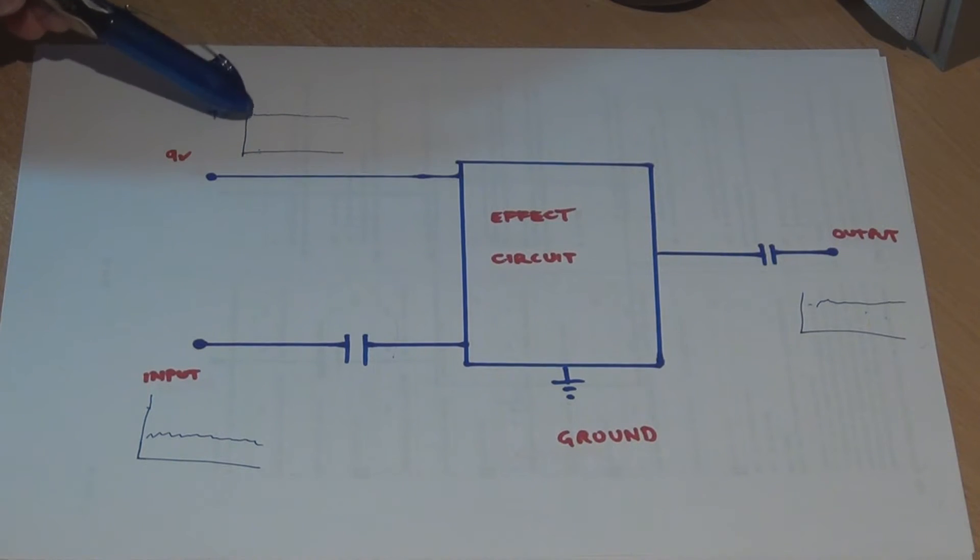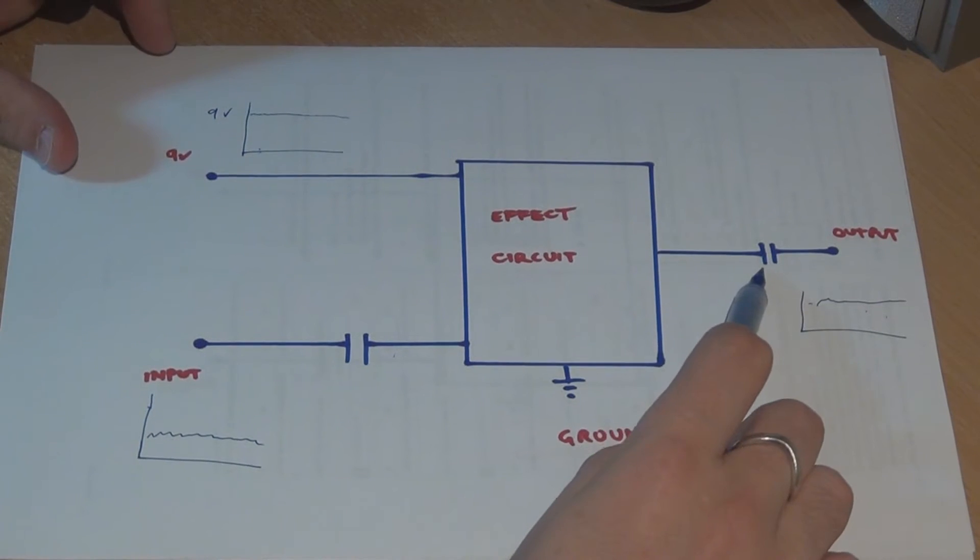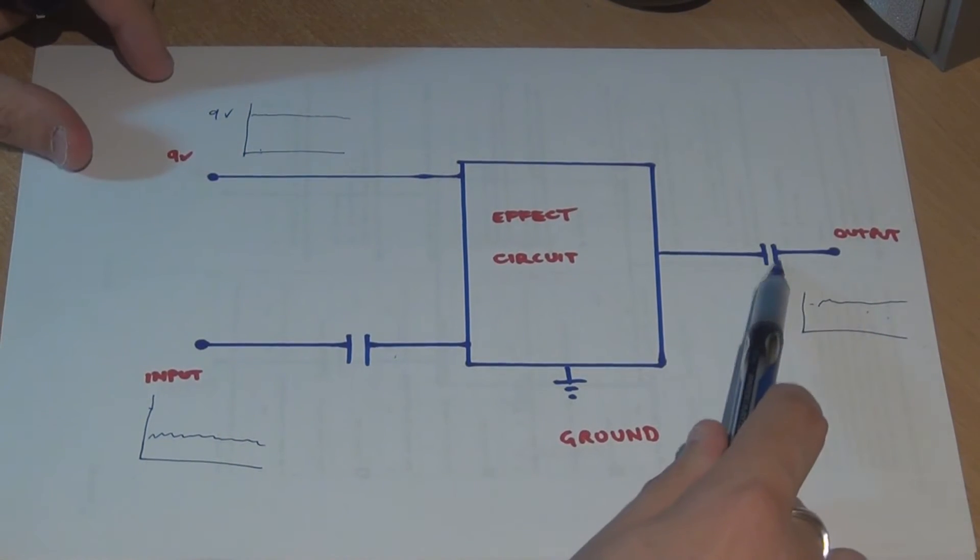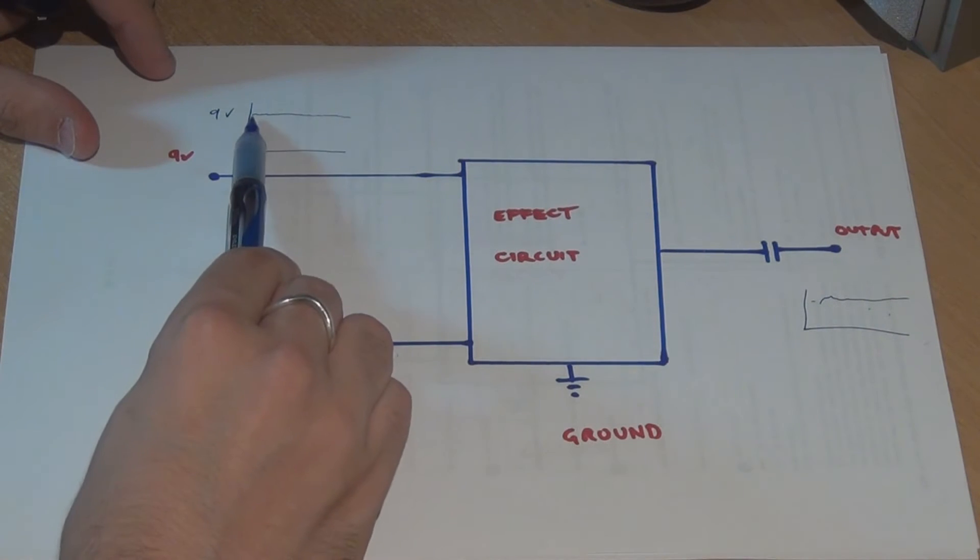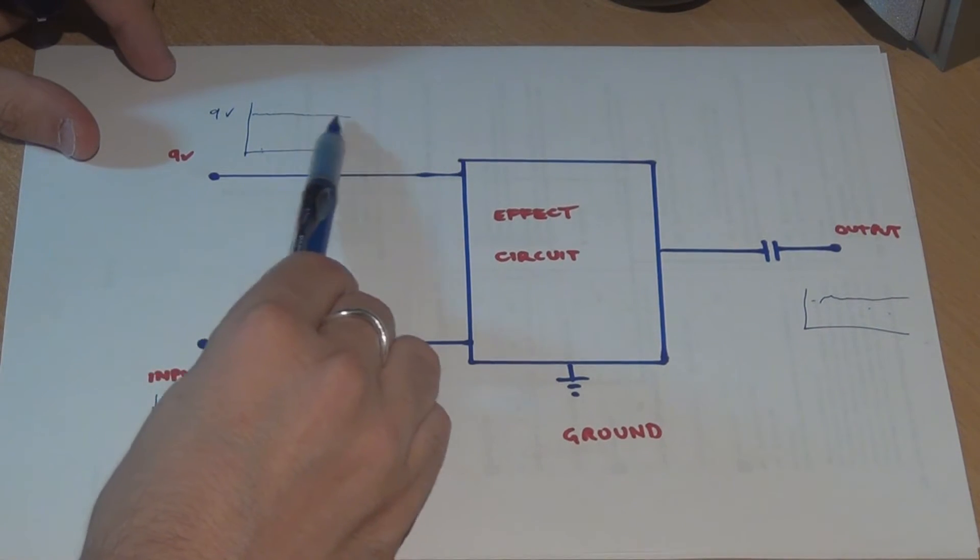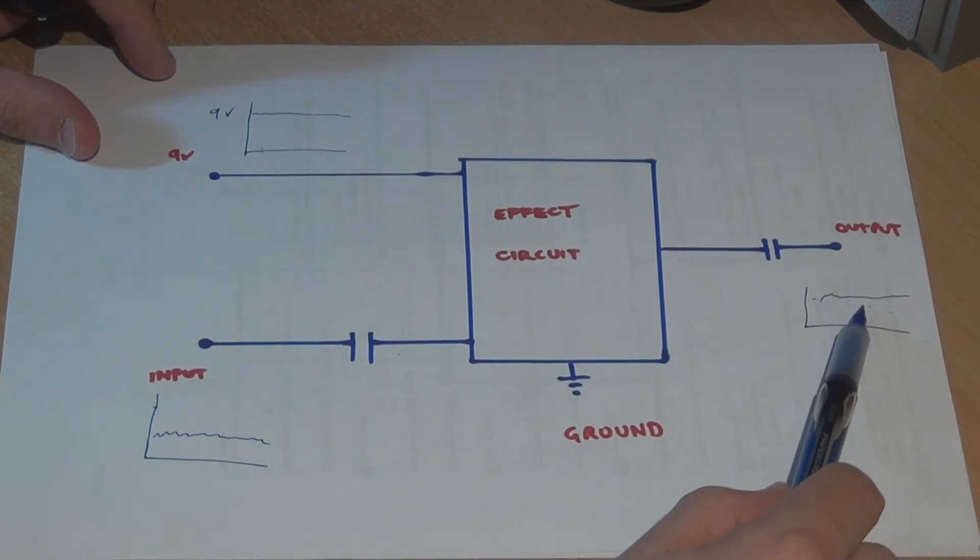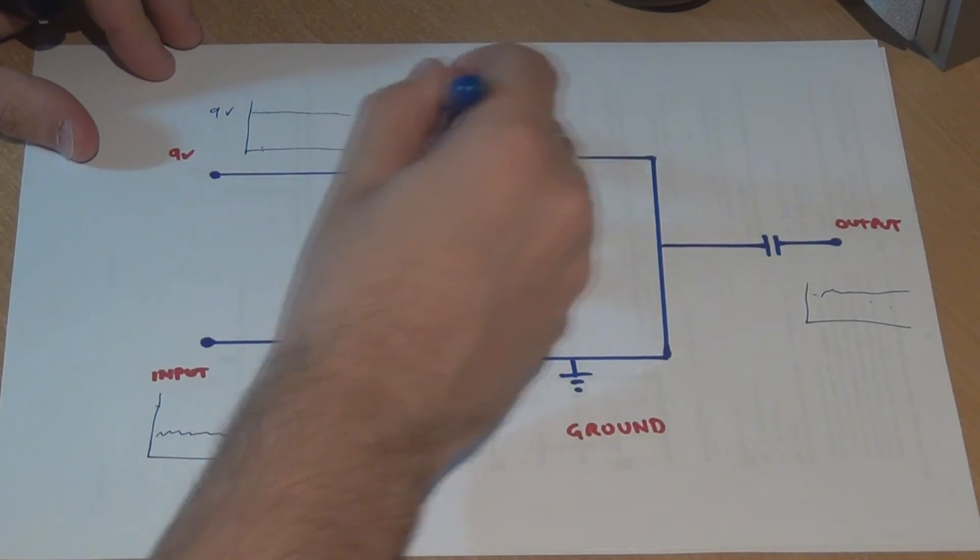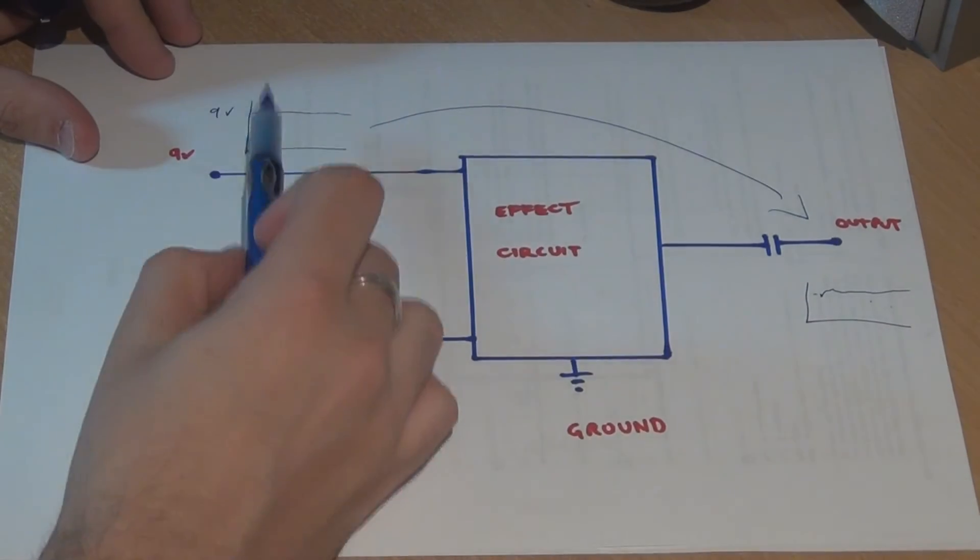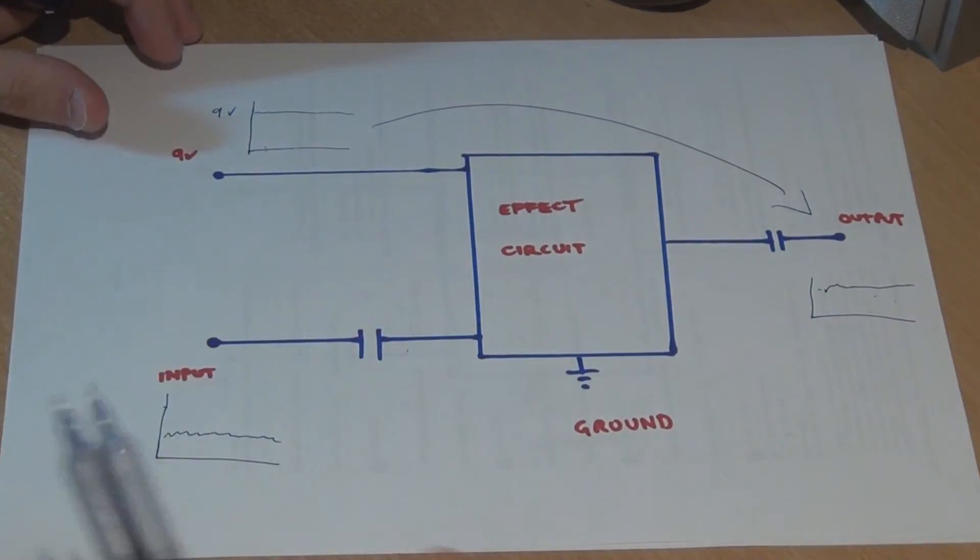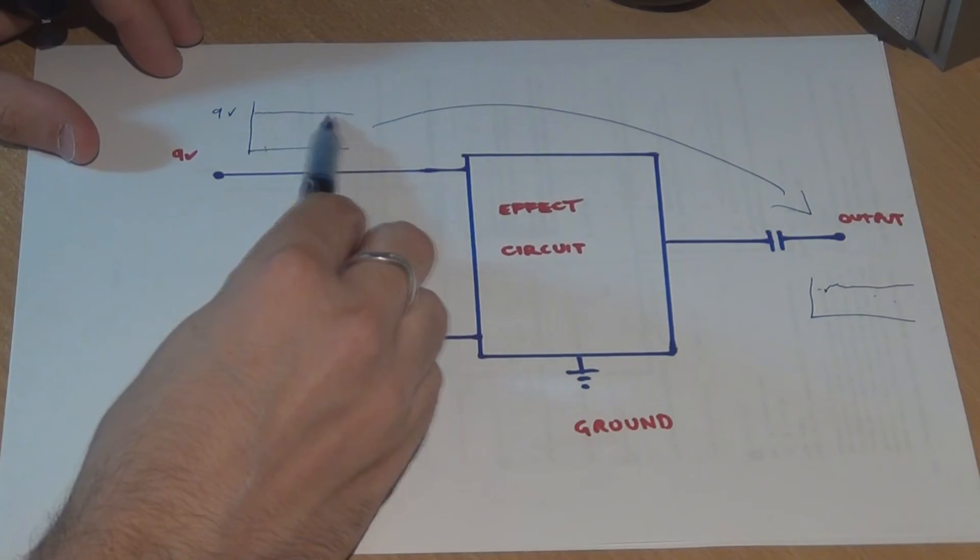And if you've got this ripple, it's actually what you're hearing on your output. Because as far as capacitors go, a capacitor will block DC voltage. So it's going to block this 9 volts. But that ripple that you get on the 9 volts will actually come out on the output. It'll be sort of in addition to what you're getting from your guitar signal. So that's where that noise is coming from, that sort of whistling noise. It's this ripple in the 9 volts. It's passing through the circuit and it's actually being added to your guitar signal.